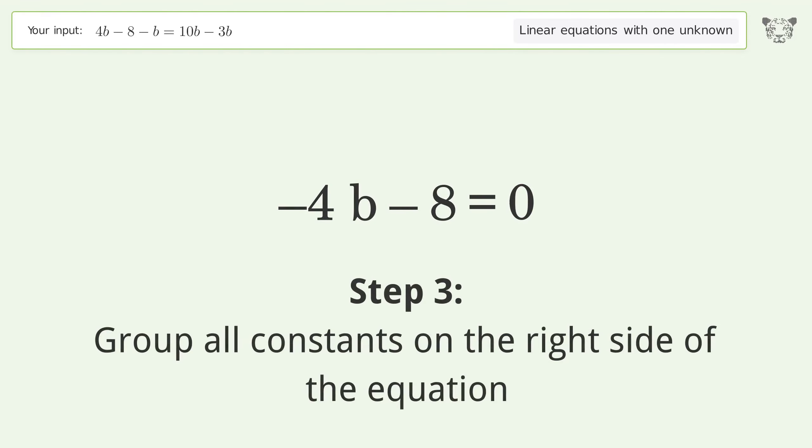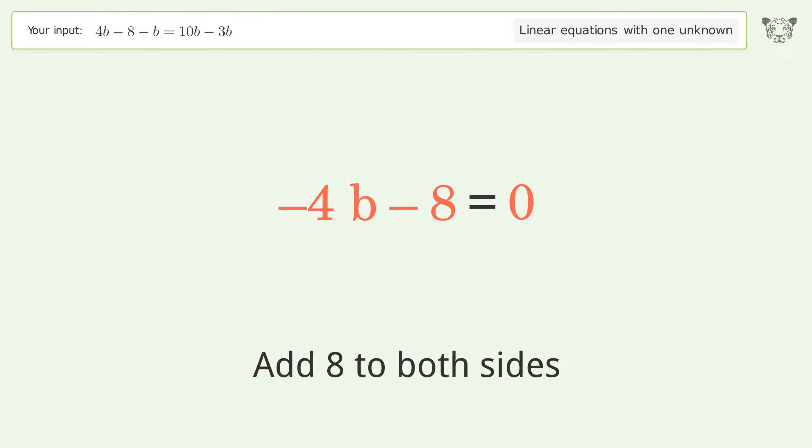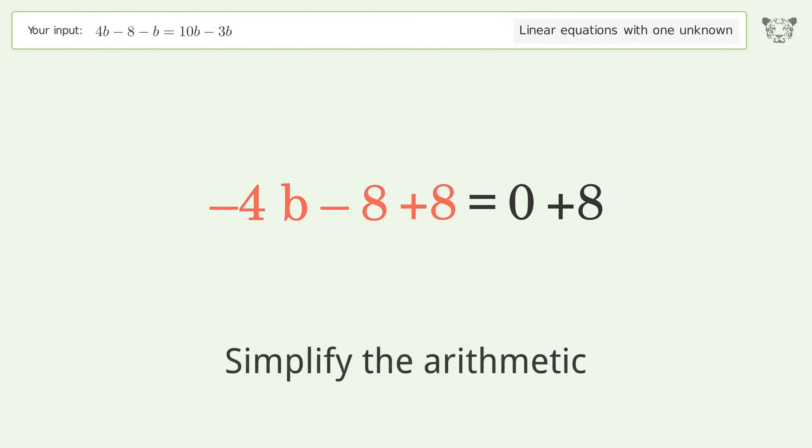Group all constants on the right side of the equation. Add 8 to both sides and simplify the arithmetic.